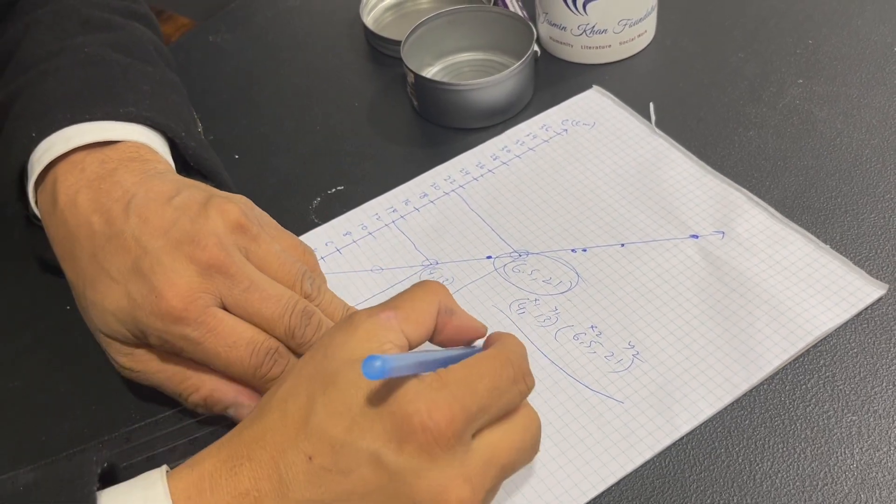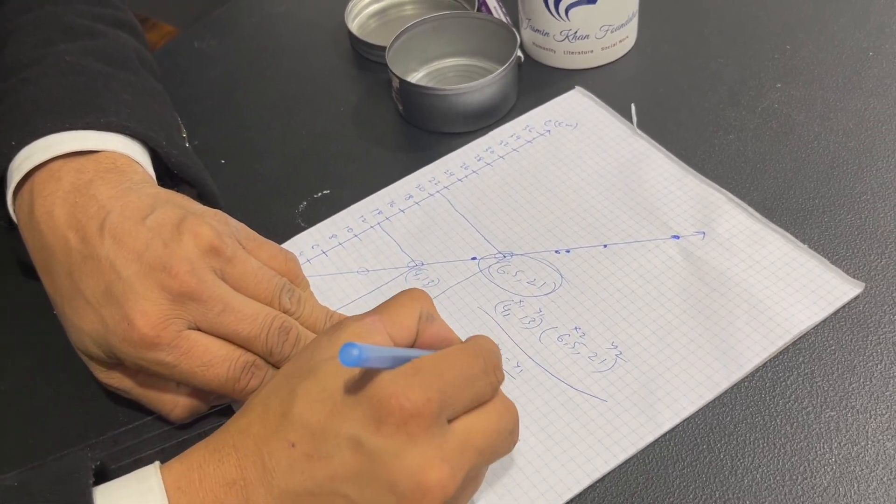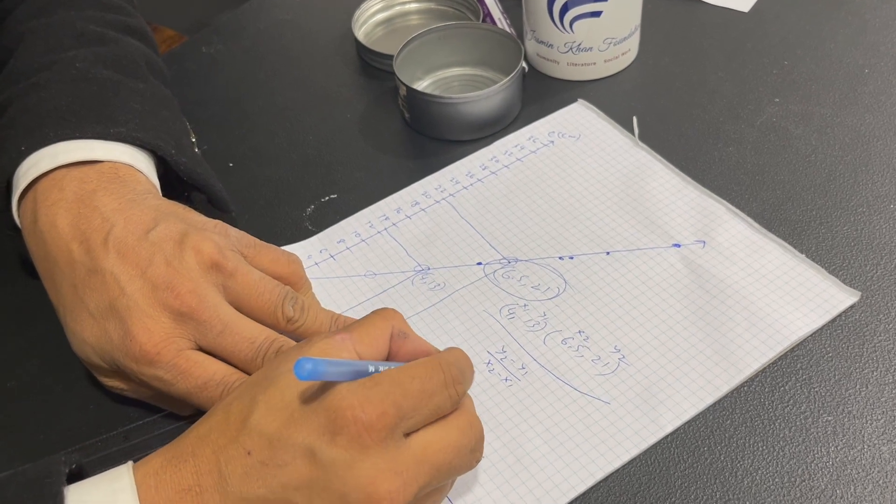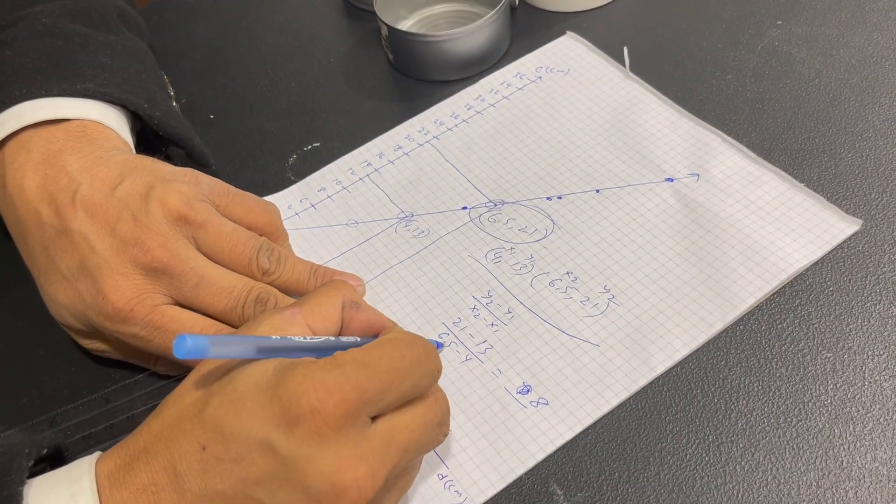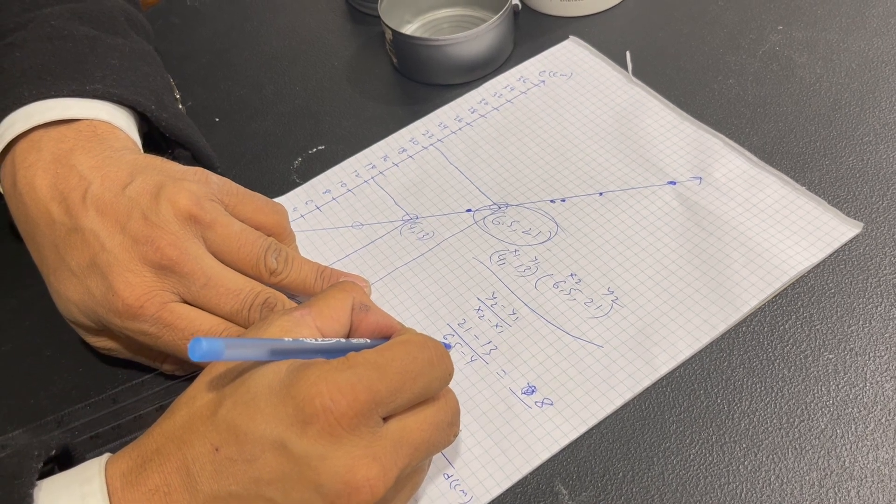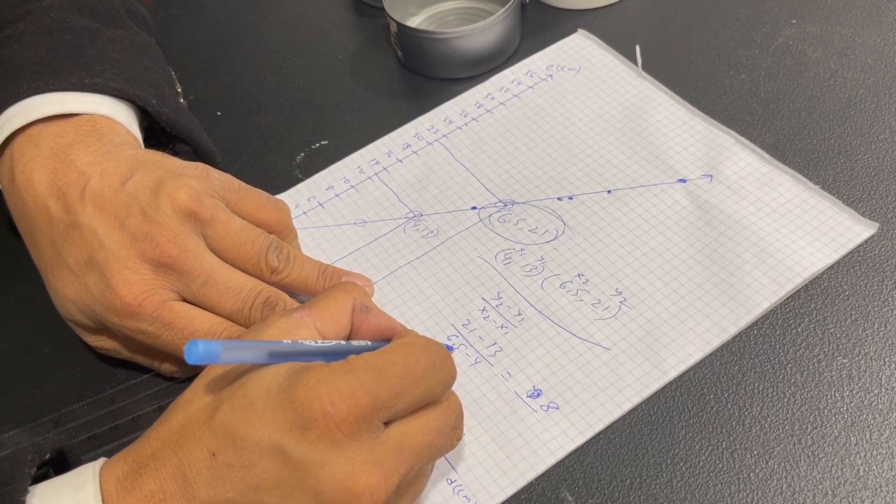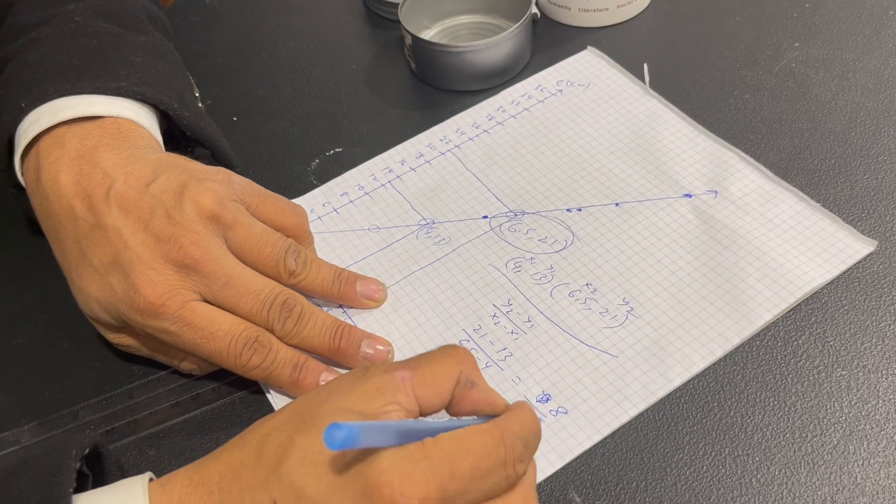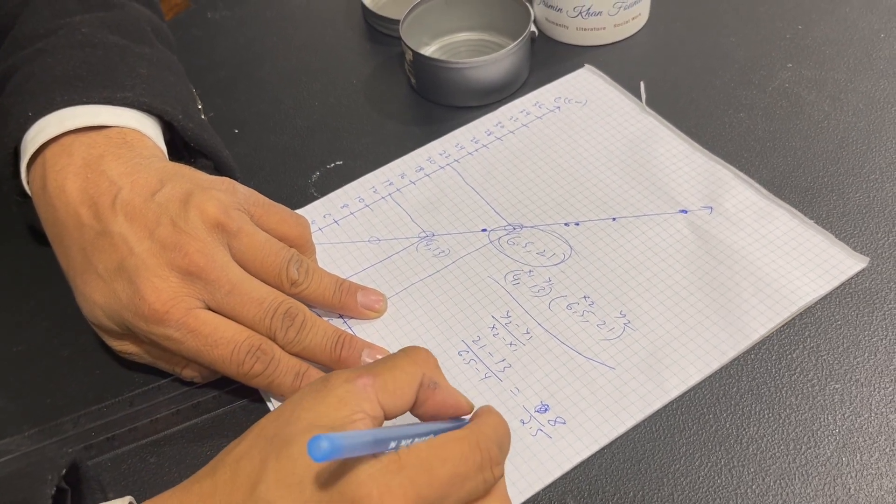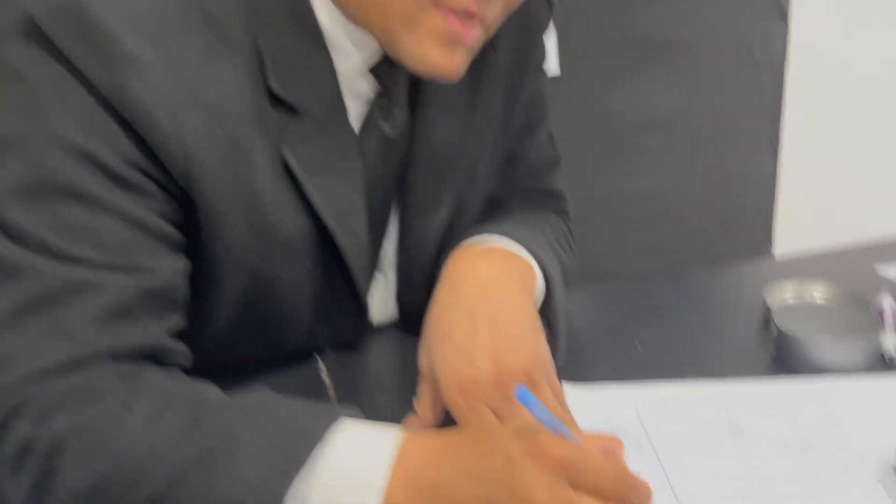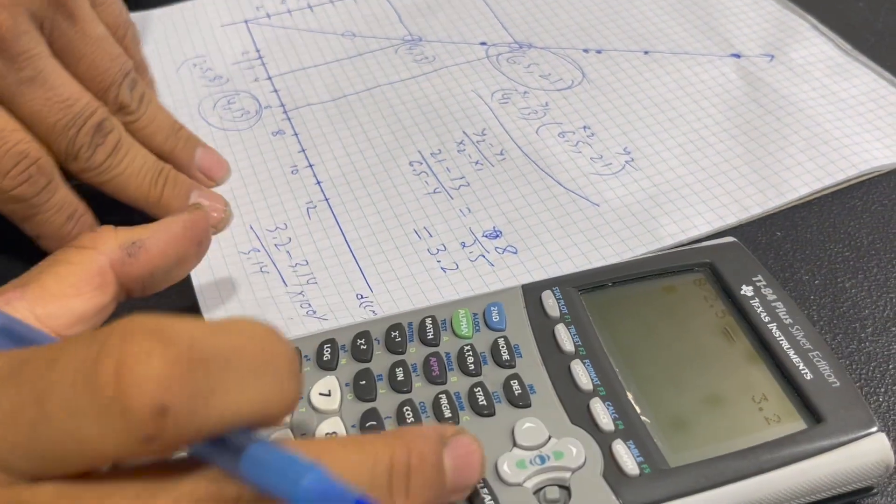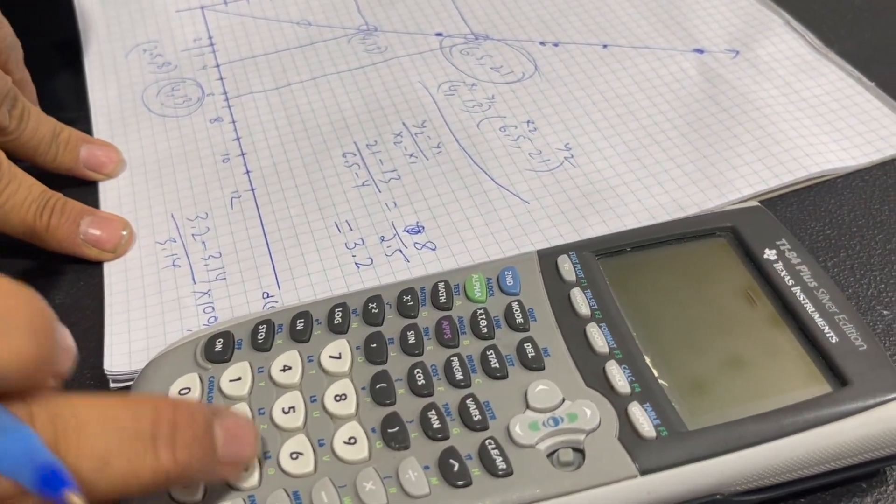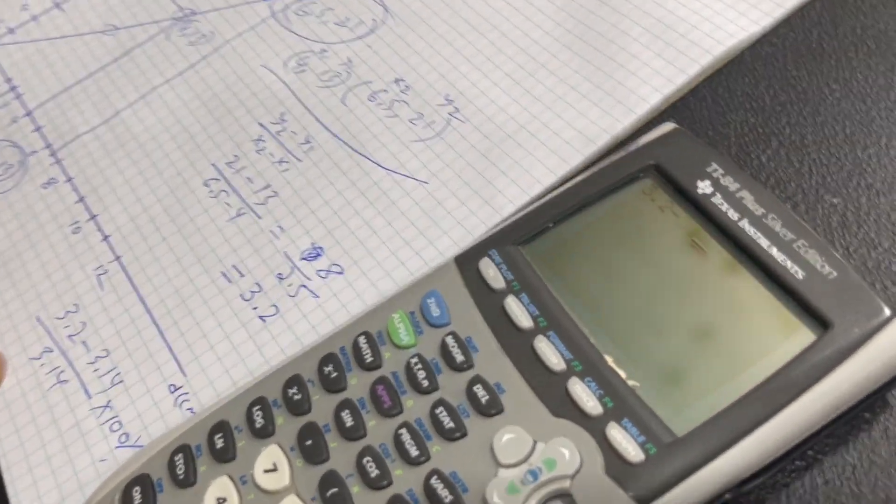So make sure you have that. So Y2 minus Y1, X2 minus X1. So Y2 is 21 minus 13, 8. And 6.5, 2.5. So 8 divided by 2.5 is 3.2. 3.2 minus 3.14 divided by 3.14 times 100%. Hopefully this is less than 5%. So 3.2 minus 3.14.